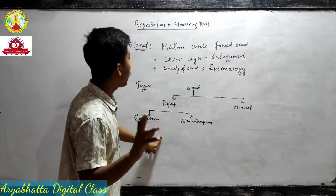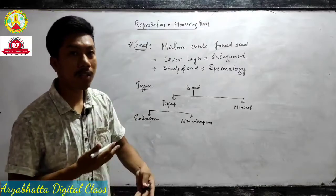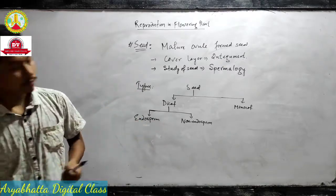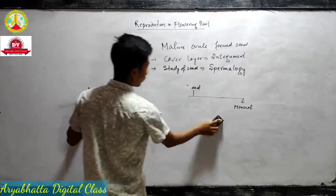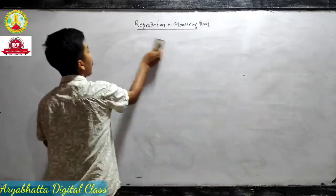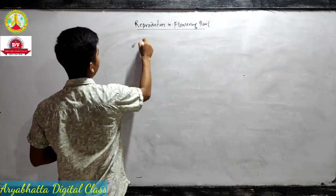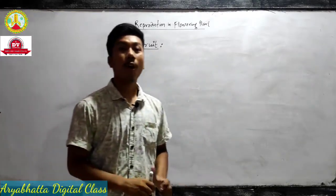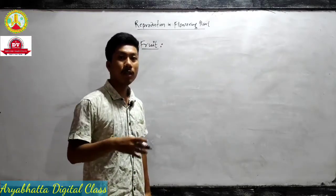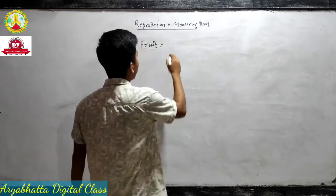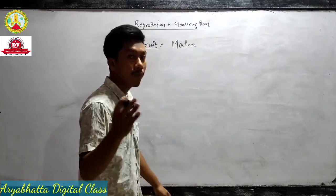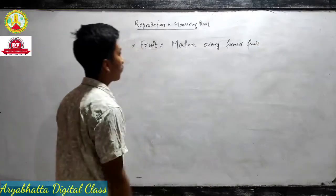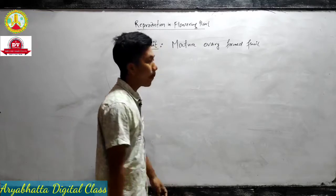Remember: the mature ovule gives rise to a seed, and the study of seed is known as spermology. It has a cover layer known as integument. Next we will discuss fruits. Which structure gives rise to a fruit? The mature ovary. When the ovary becomes mature it results in the formation of fruit — so mature ovary forms fruit.